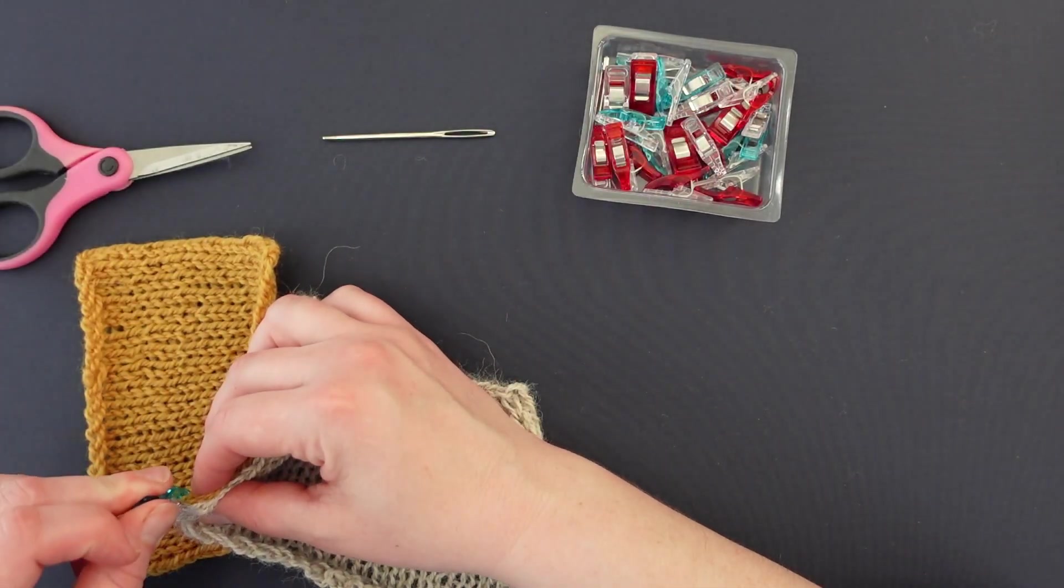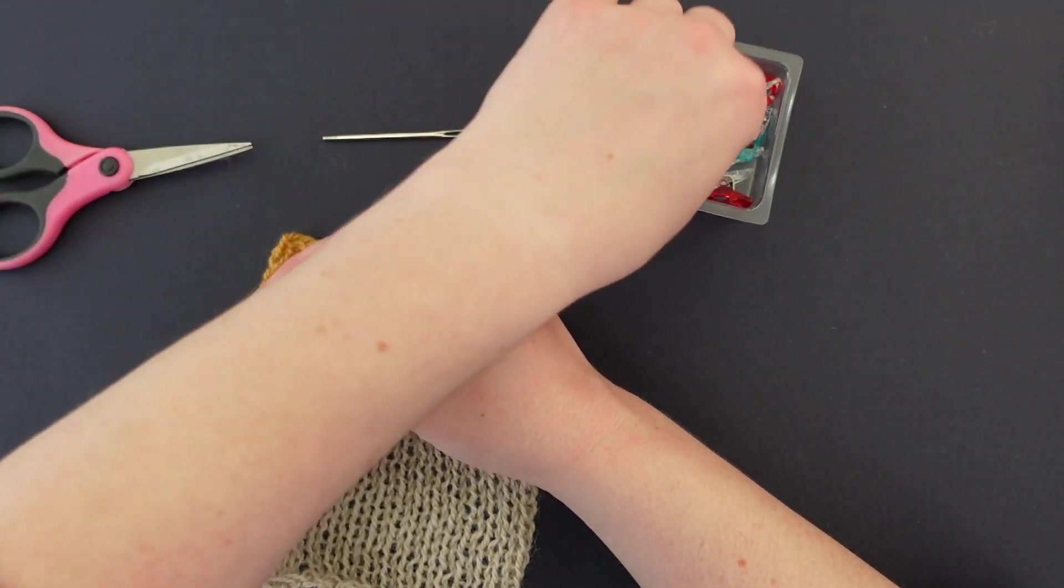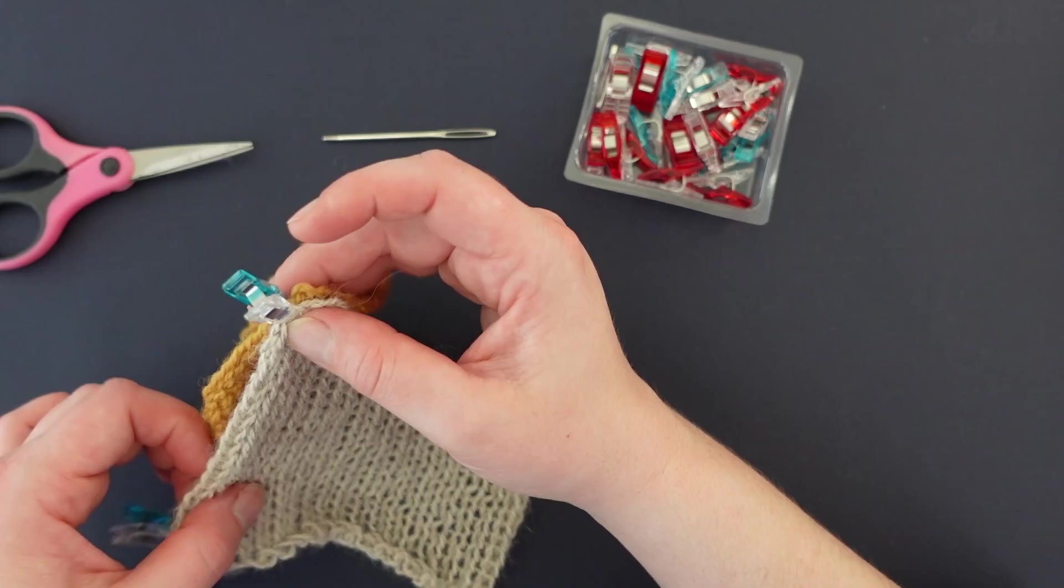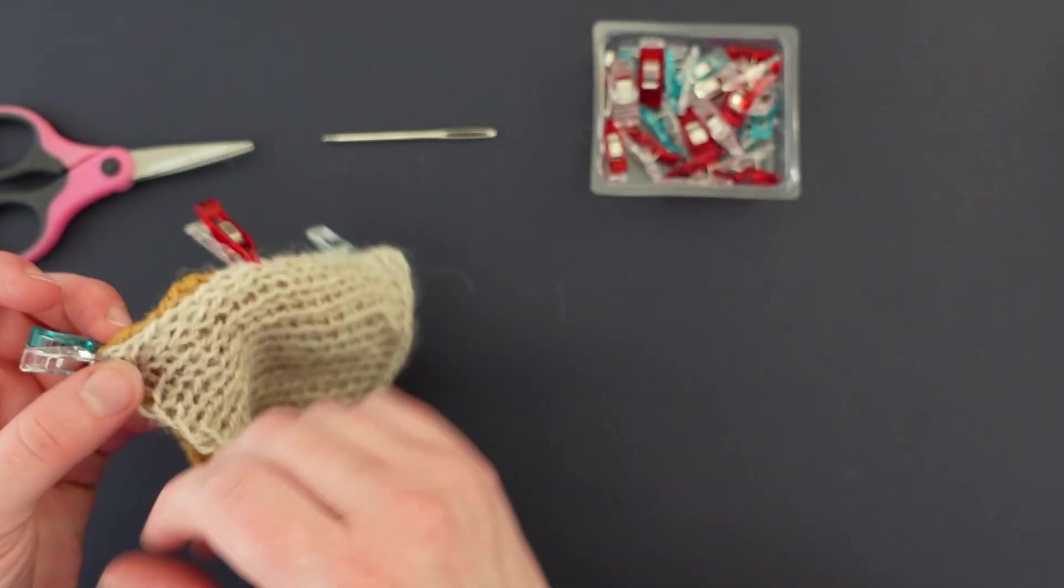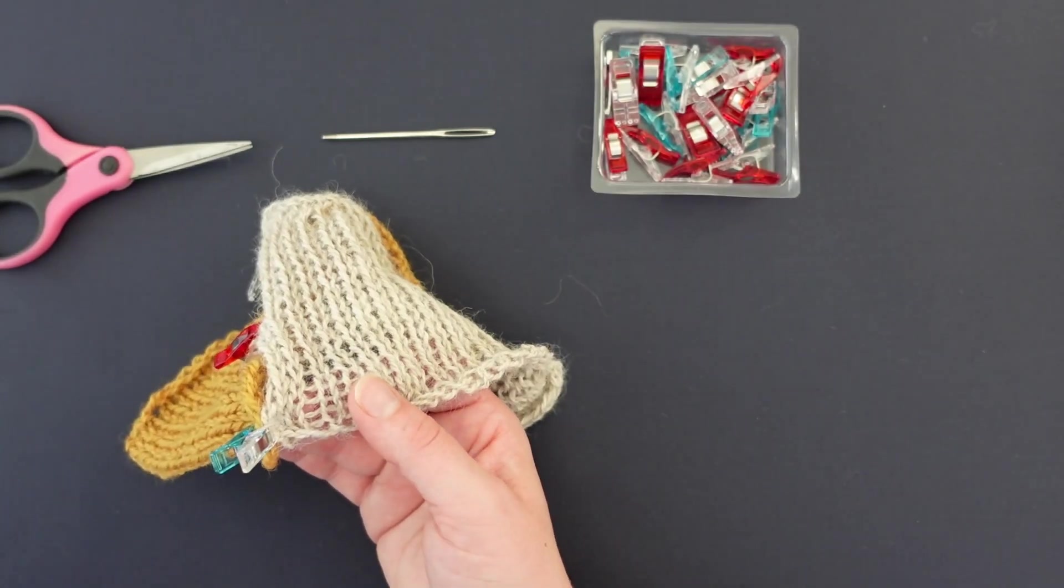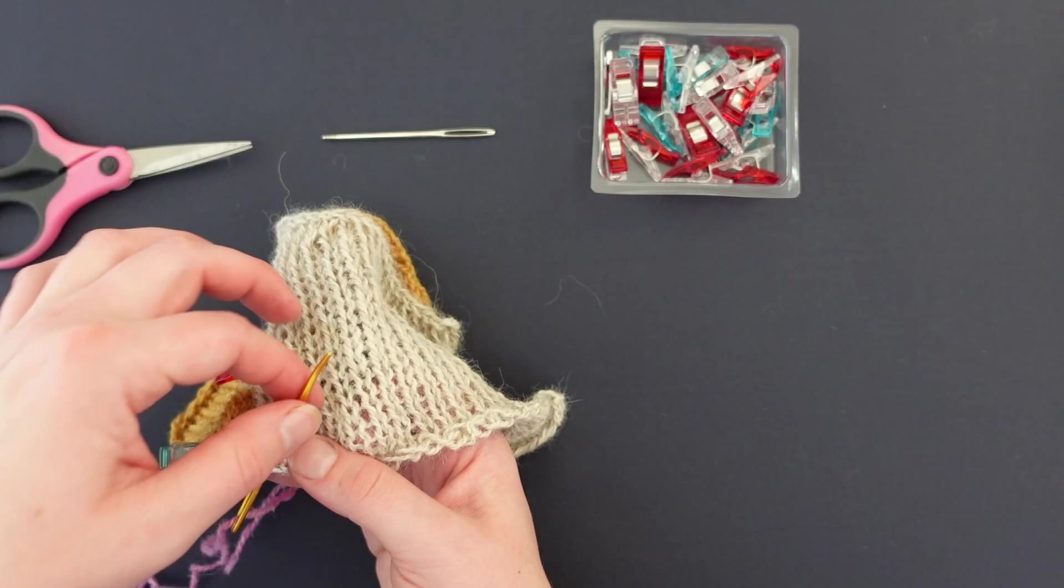You're always going to do your seams on the right side of the garment. That seems really counterintuitive, especially if you are used to sewing on a sewing machine or any kind of hand sewing really. You'll say put the right sides together and you're sewing on the back side. That's different from this.